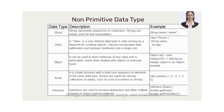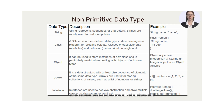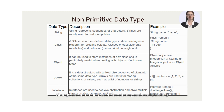Strings, classes, objects, arrays, and interfaces are fundamental concepts in programming languages that play crucial roles in software development. Each of these elements serves a specific purpose and contributes to the overall structure and functionality of a program. Strings are sequences of characters that represent text data in a programming language. They are commonly used for storing and manipulating textual information such as names, messages, and other data that require textual representation.